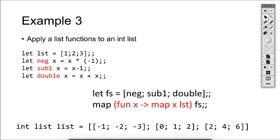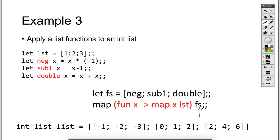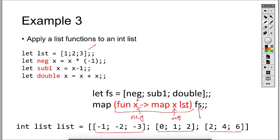In this example, we create a list of functions and apply those functions to a given list. We have three functions — neg, sub, and double — each of type int -> int. We create a list fs of those three functions. Now we send fs as a list to the map and send an anonymous function that receives an x and applies that x to each member of the list. So map sends neg as x to this anonymous function first, which applies neg to every member of the list [1, 2, 3], then sub_one, then double — applying each function one at a time to the given list.